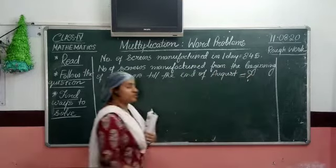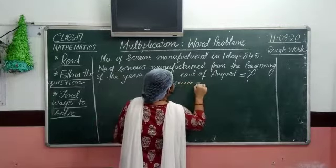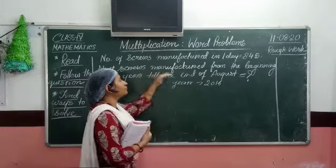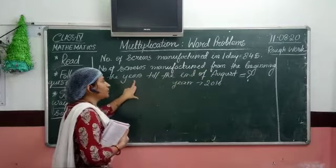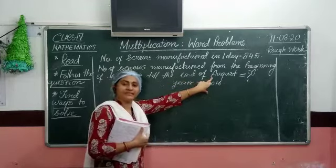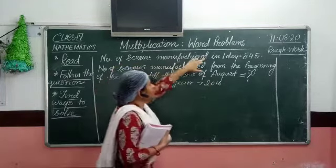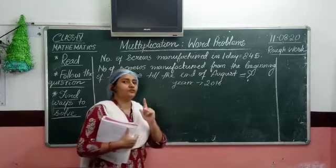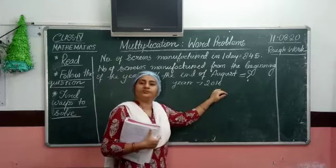One more information is given to you — the year was 2016. So what we have to do here is find out the total number of days during this period, from the beginning of the year 2016 till the end of August 2016. We have to find the total number of days because the first statement is given in terms of days. But before finding that out, one more thing we have to do — we have to find out whether 2016 was a leap year or not.